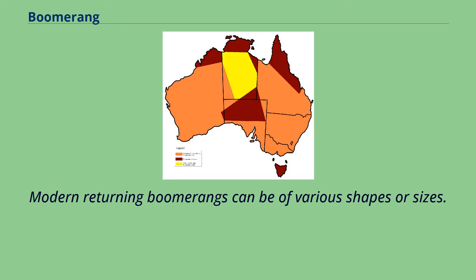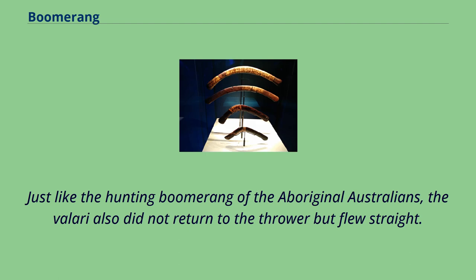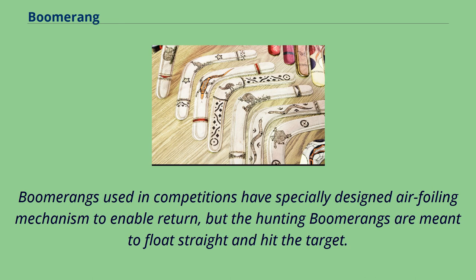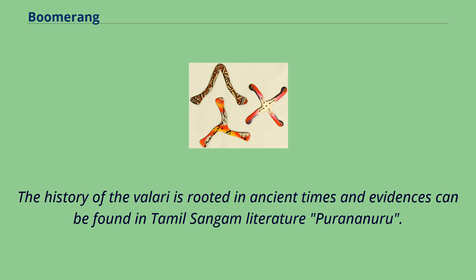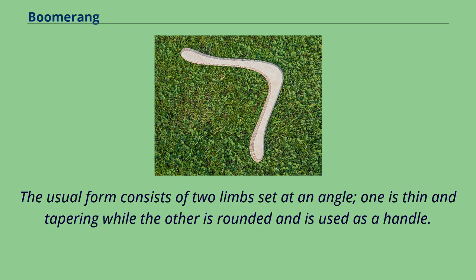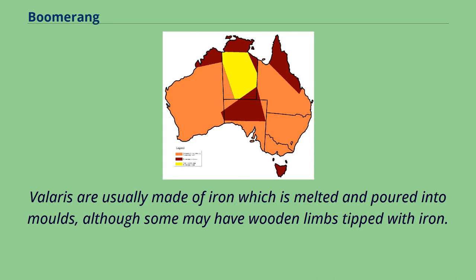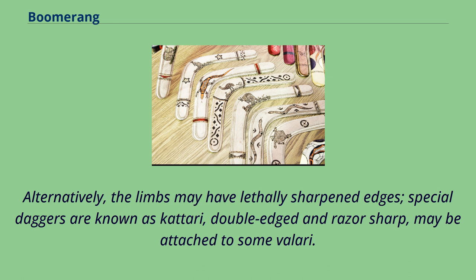Modern returning boomerangs can be of various shapes or sizes. Just like the hunting boomerang of the Aboriginal Australians, the velari also did not return to the thrower but flew straight. Boomerangs used in competitions have specially designed airfoiling mechanisms to enable return, but hunting boomerangs are meant to fly straight and hit the target. Velaris are made in many shapes and sizes. The history of the velari is rooted in ancient times and evidence can be found in Tamil Sangam literature. The usual form consists of two limbs set at an angle — one thin and tapering while the other is rounded and used as a handle. Velaris are usually made of iron melted and poured into moulds, although some may have wooden limbs tipped with iron. The limbs may have lethally sharpened edges; special daggers known as kattari, double-edged and razor-sharp, may be attached to some velari.